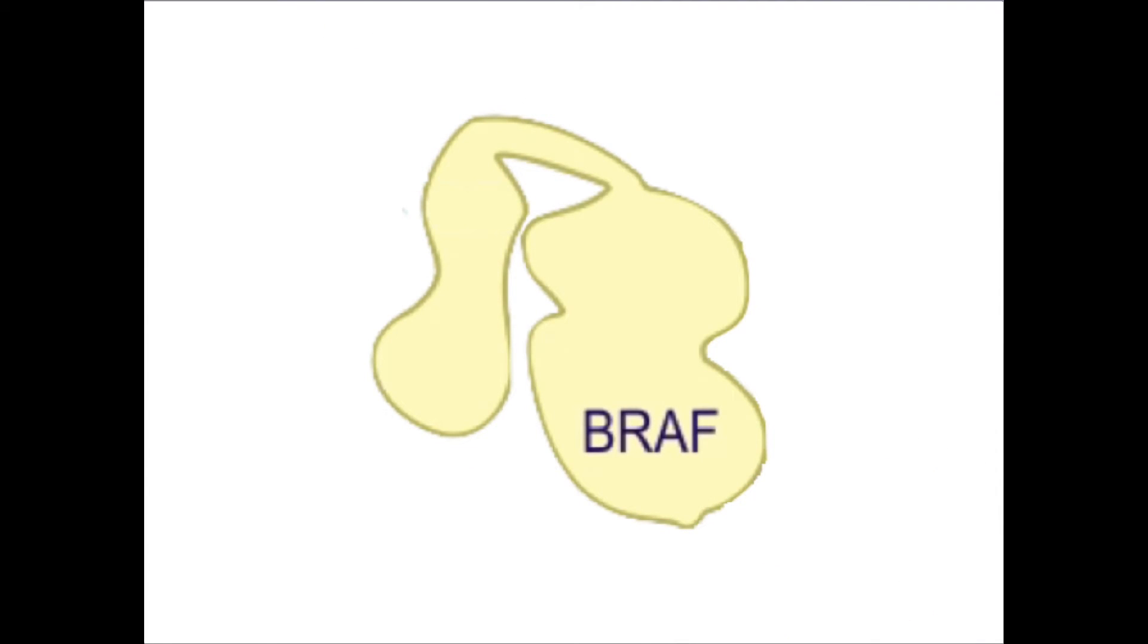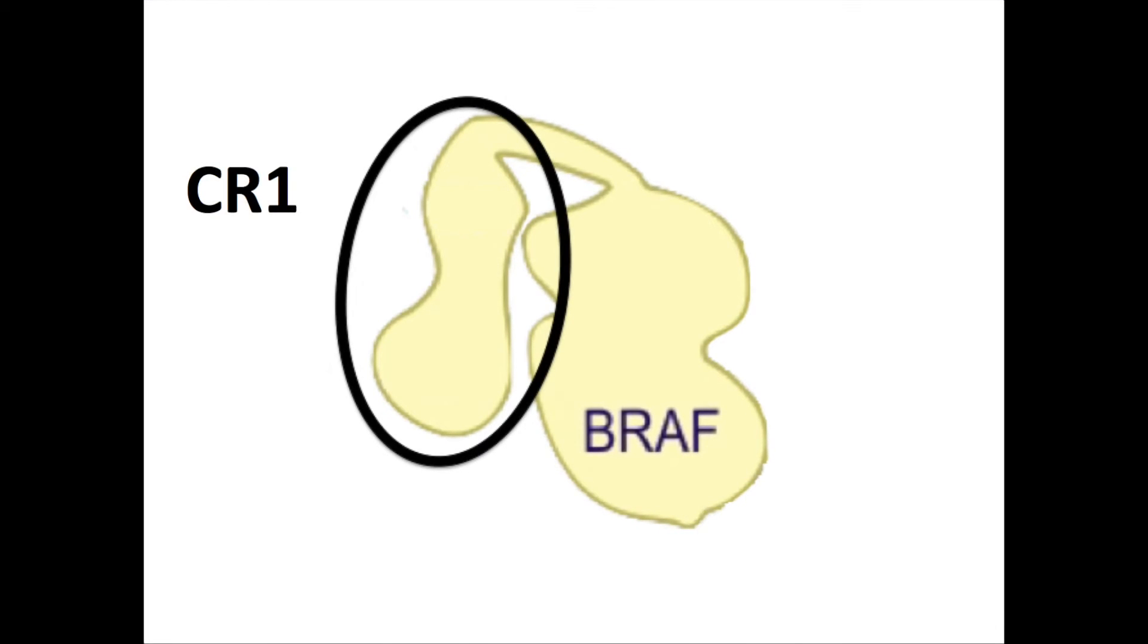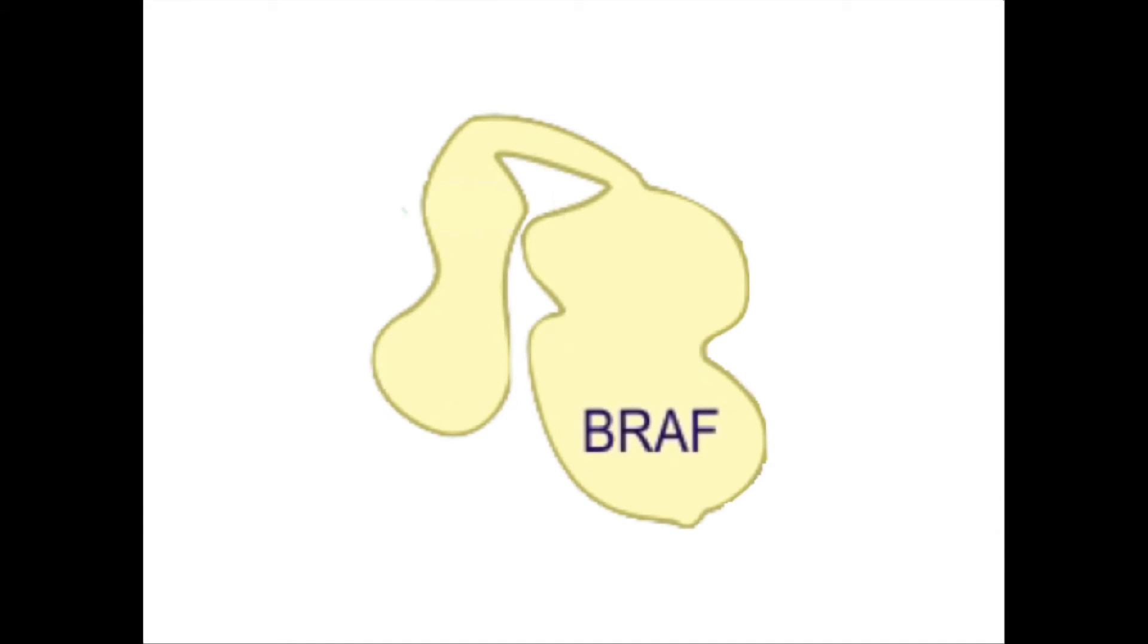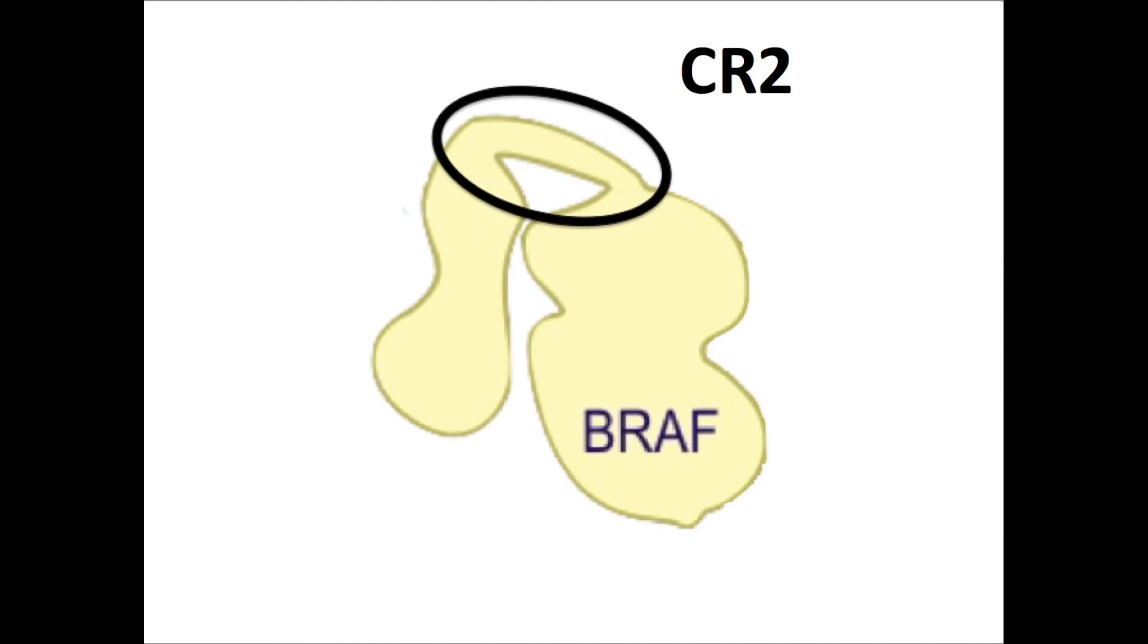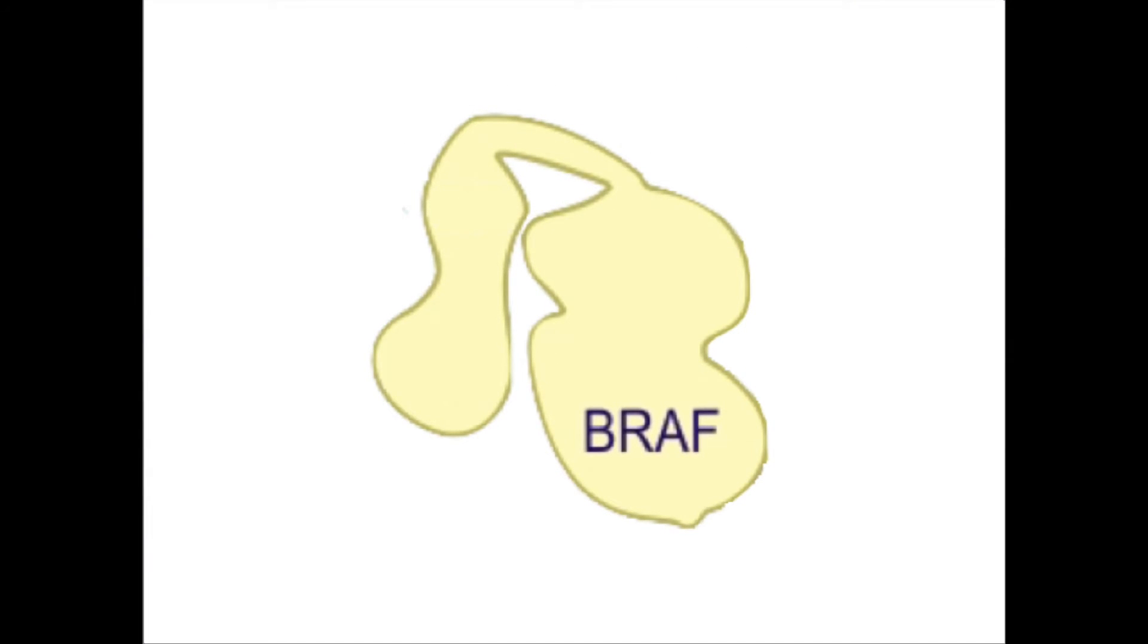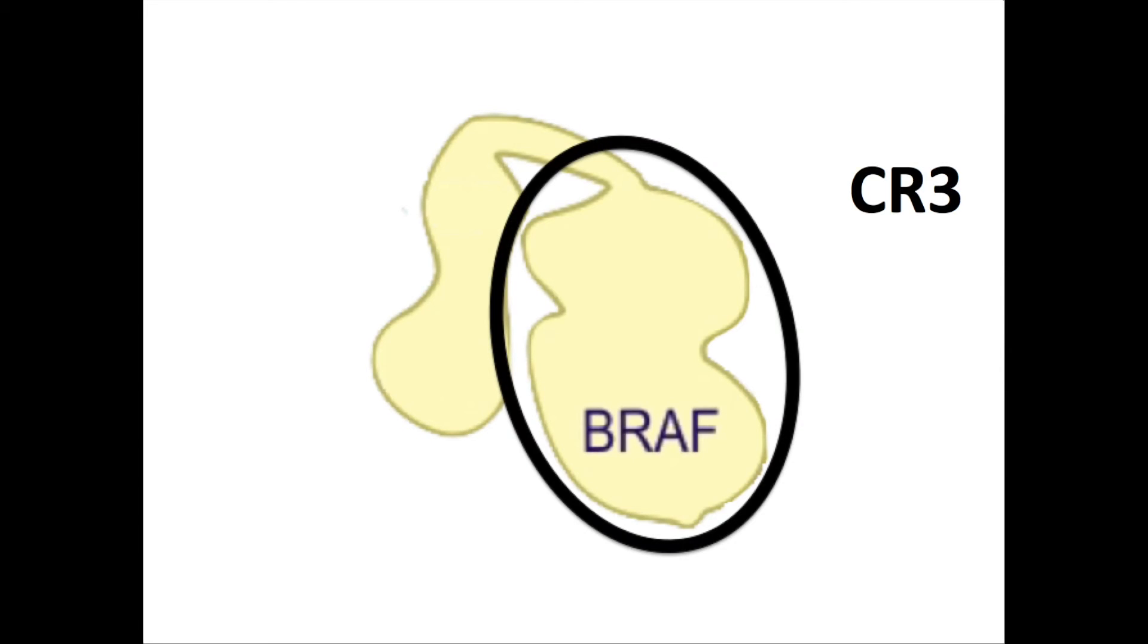This is wild type BRAF. BRAF is a serine and threonine kinase consisting of 766 amino acids. It is able to phosphorylate serine and threonine residues on MEK. Structurally, BRAF can be divided into three parts called conserved regions or CR. Conserved region 1 can bind RAS. Conserved region 2 acts as a hinge between CR1 and CR3. Conserved region 3 can bind MEK and ATP.